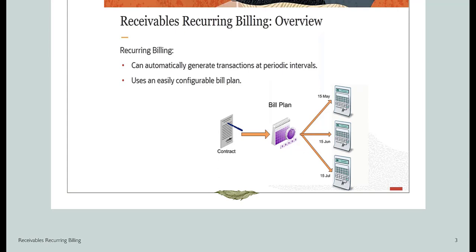The bill plan allows you to create and capture contract attributes such as business unit, currency, billing frequency, and customer information. It allows you to process recurring transactions automatically based on frequency. The bill plan also allows you to generate future transactions and gives you the ability to track modifications made to it. You can review transactions generated by the bill plan by navigating to the Billing work area and checking Manage Recurring Bill Plan to see what invoices or transactions have been generated.